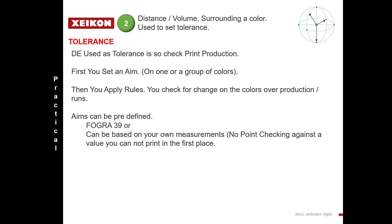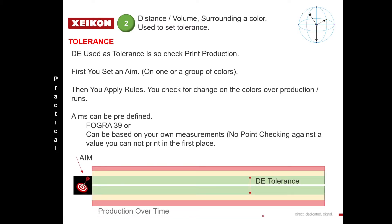Next we have tolerance. This is often used when we want to check print production or stability of production. Again, you have a set of aims — you can choose your own or use pre-defined ones — and then you apply some rules around those aims, such as what is acceptable in terms of drift. When we look at institutes like FOGRA, we find standards like FOGRA 39, and also GRACOL, which are pre-defined tolerances. Or you can set your own tolerances and aims. Over time we can measure and take note of how our system is performing.